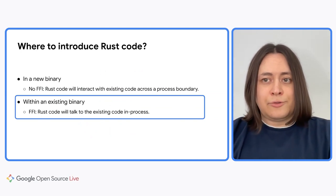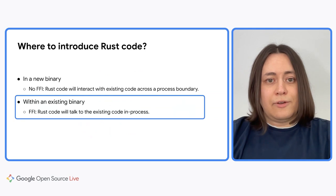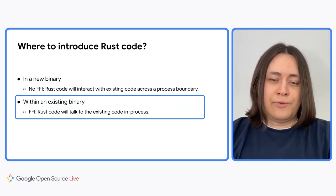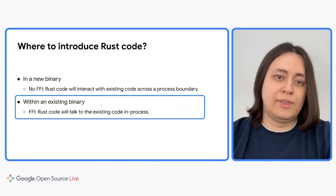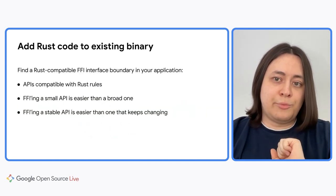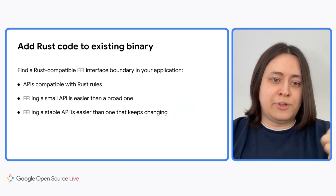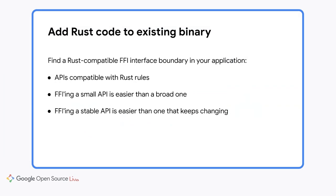Now let's talk about adding Rust code to an existing binary. In this case, Rust code will talk to your existing code through an in-process foreign function interface, or FFI for short. Let's say your existing application is written mostly in C++. You should find an interface boundary in your application where it will be convenient for C++ to interact with Rust. The API on this cross-language boundary should be compatible with Rust aliasing and borrow-checking rules. Another factor to consider is that bridging small and stable APIs to Rust is easier and cheaper to maintain compared to bridging broad and constantly changing APIs.